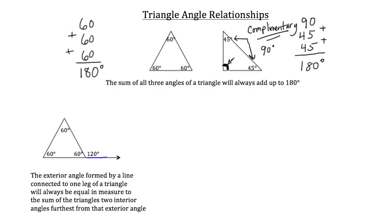This line highlighted in blue happens to be connected to this leg of the triangle. You know it's a straight line because if you were to add these two angles — 60 degrees and 120 degrees together — you'd get 180 degrees, and 180 degrees is a straight line. So here's a line connected to one leg of a triangle, and this is going to be the exterior angle formed by that line. That angle pointed to in blue is that exterior angle.